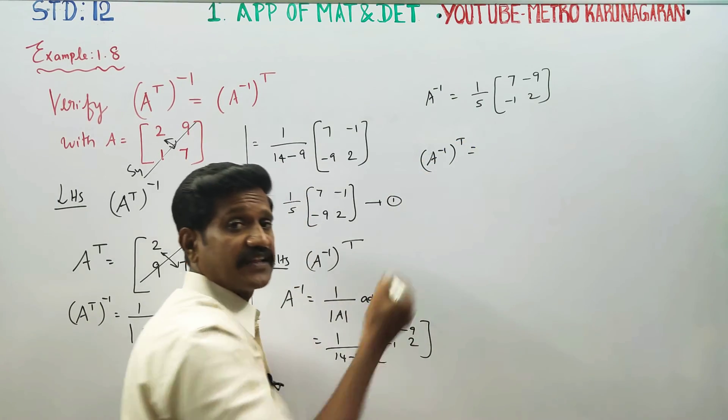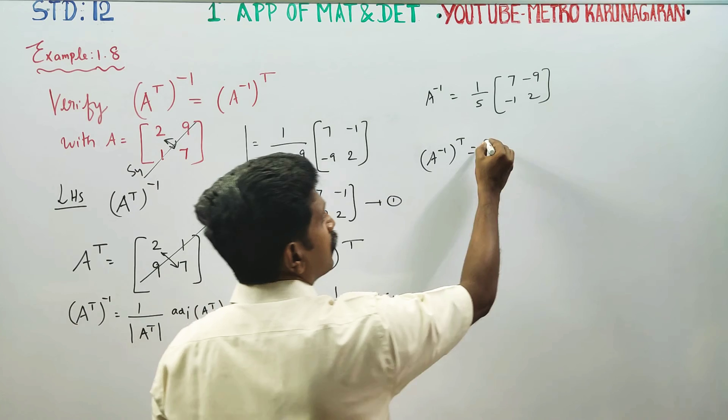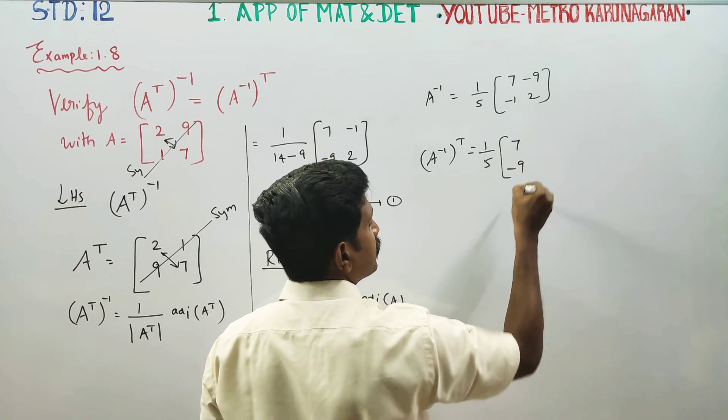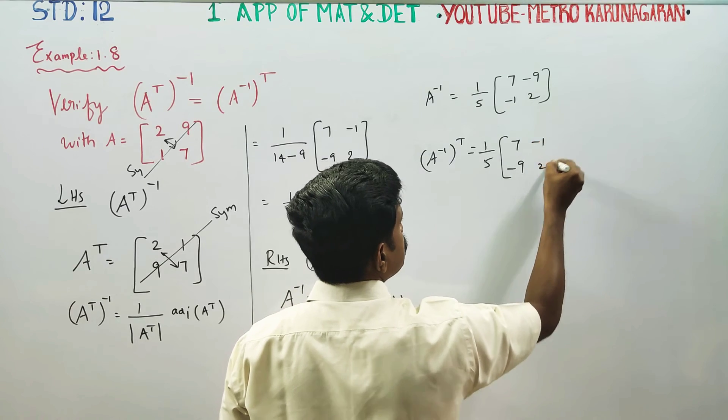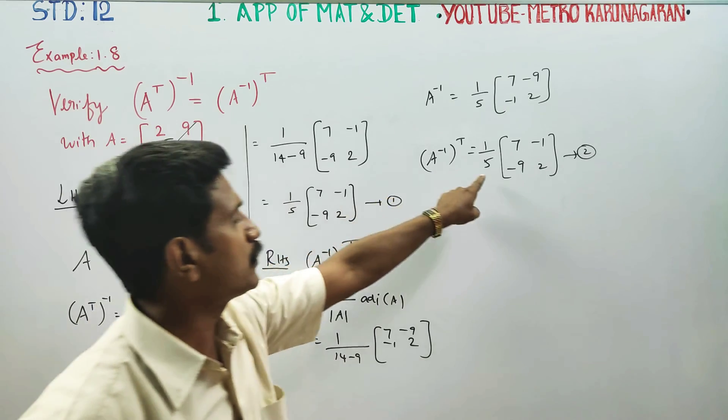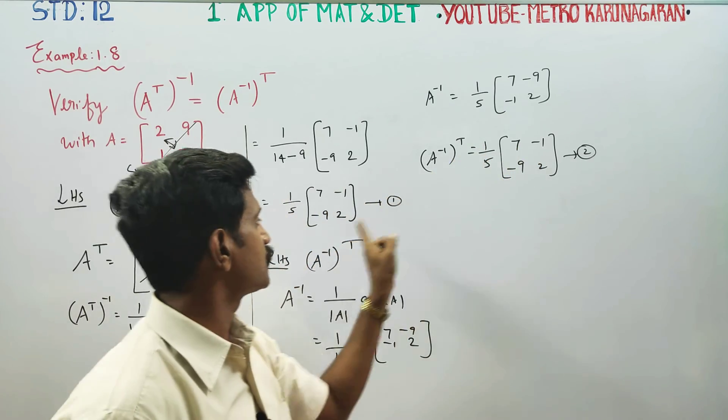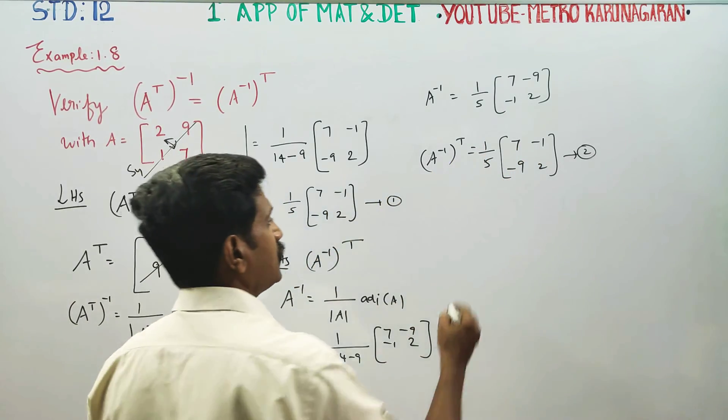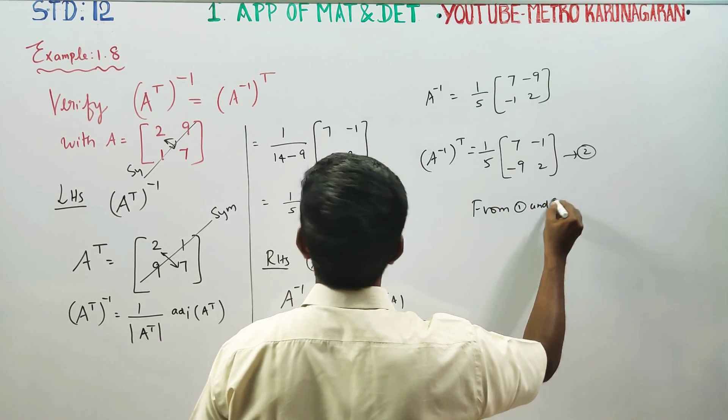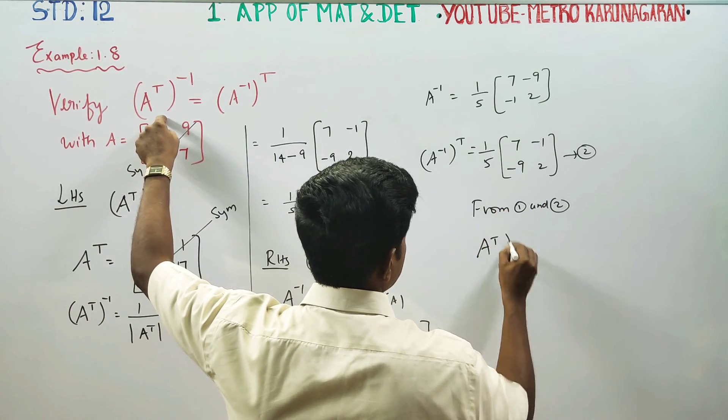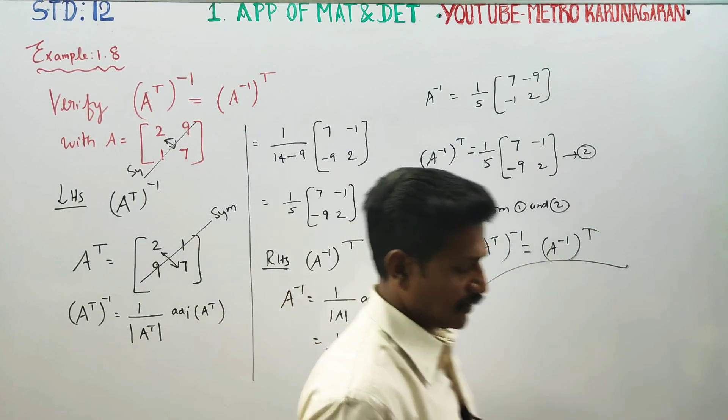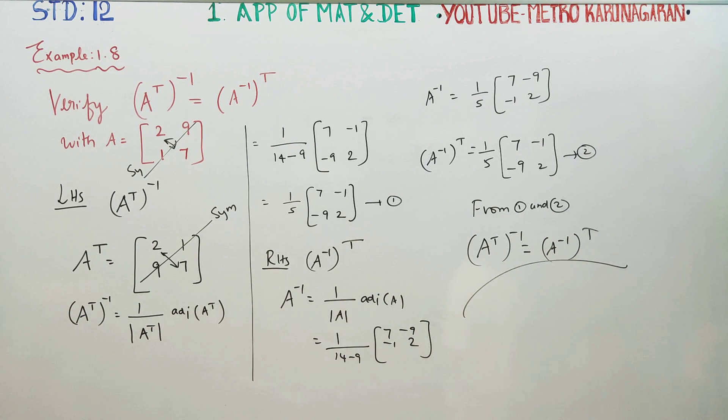A inverse transpose is 1 by 5, 7 minus 1, minus 9, 2, result number 2. Result number 1, 1 by 5, 7 minus 1. From 1 and 2, we can declare that A transpose whole inverse is equal to A inverse whole transpose. We have verified the property. Thank you.